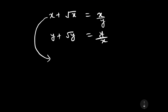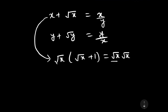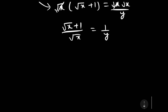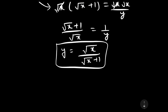From the first equation x plus √x equals x/y, we can write √x(√x + 1) equals √x · (√x / y). Dividing and rearranging gives (√x + 1)/√x equals 1/y, and taking the reciprocal gives y equals √x / (√x + 1). Consider this as equation 1.